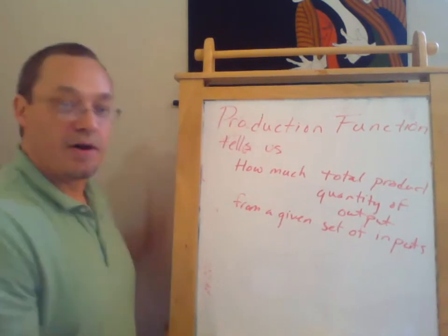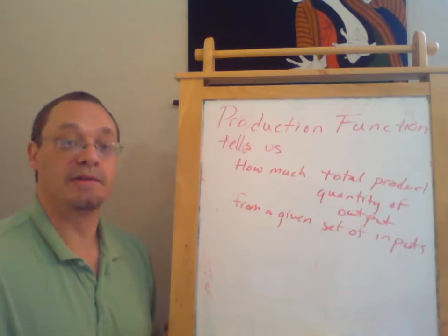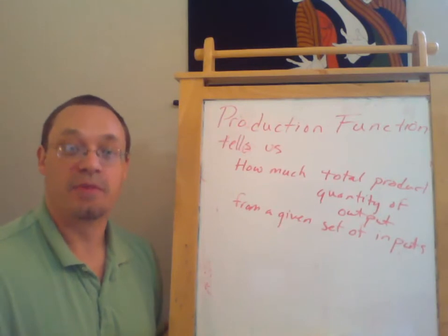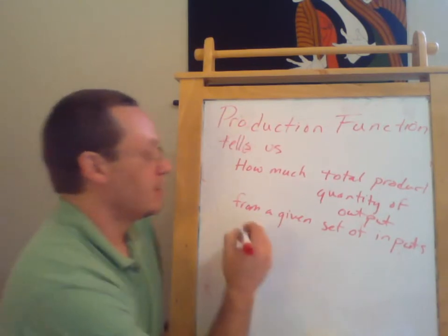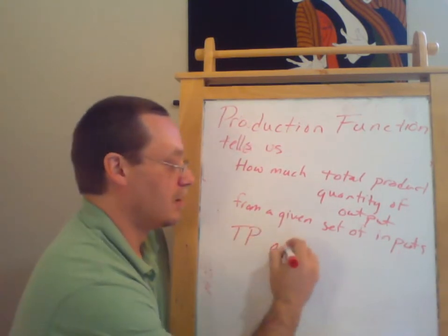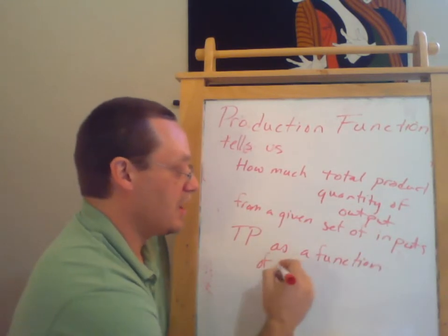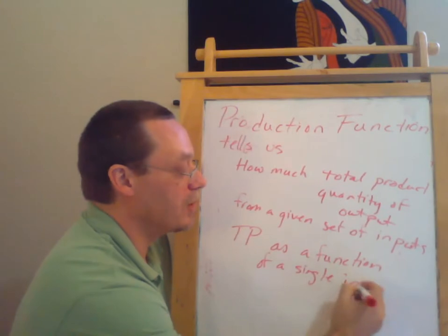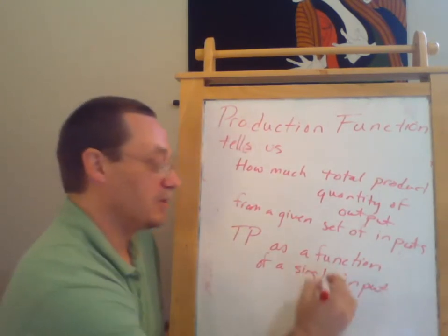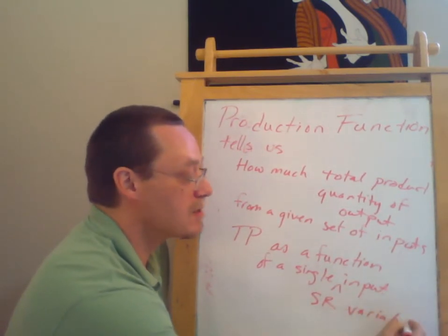In all the examples we're going to do in this series of video lectures, we're going to look at the firm's total output and how it changes as it changes just one factor of production. So we're going to look at total product as a function of a single input as that input varies in the short run. In particular, we're talking about a short run variable input.